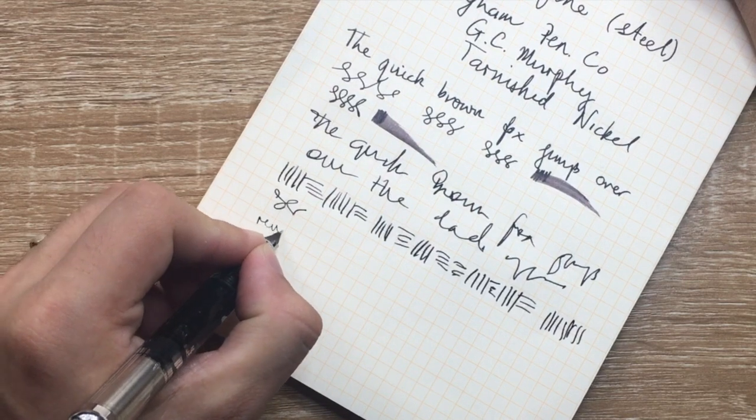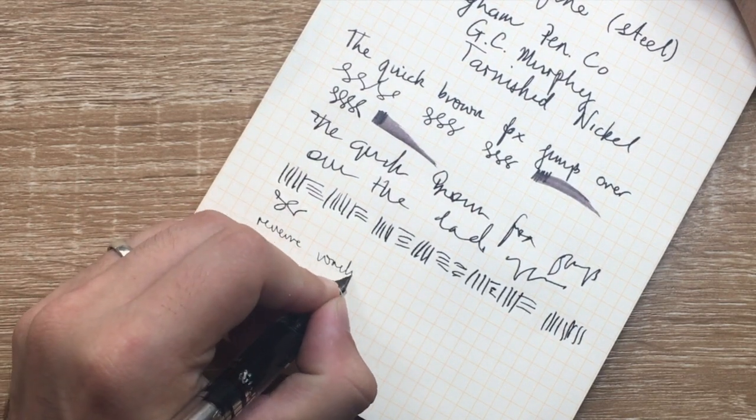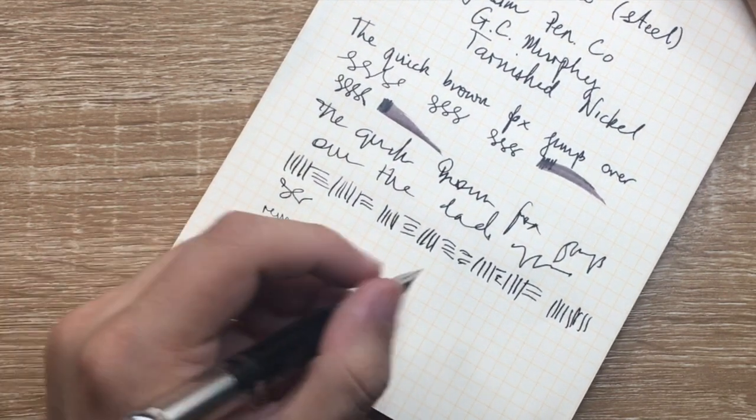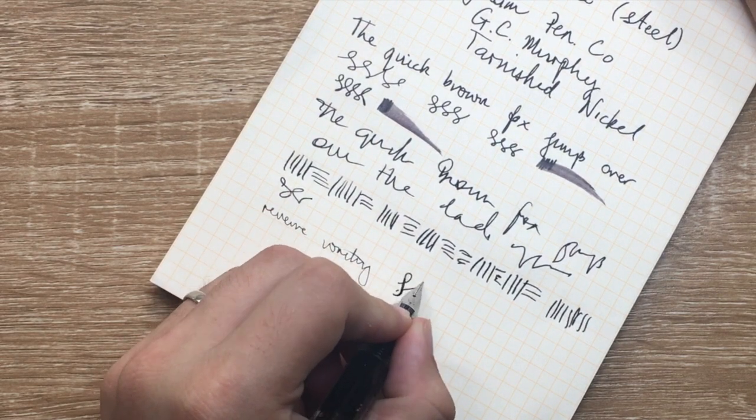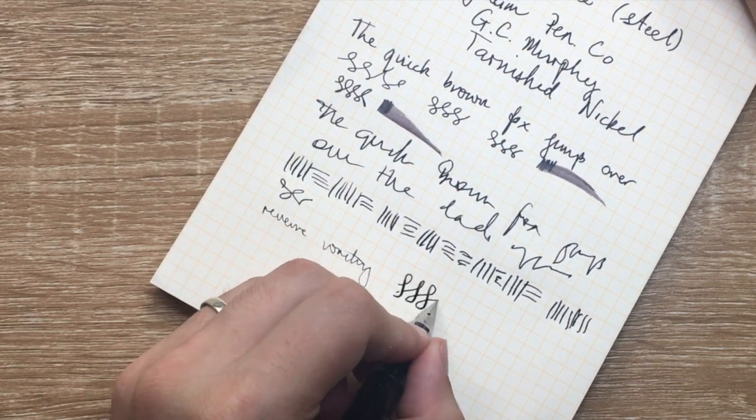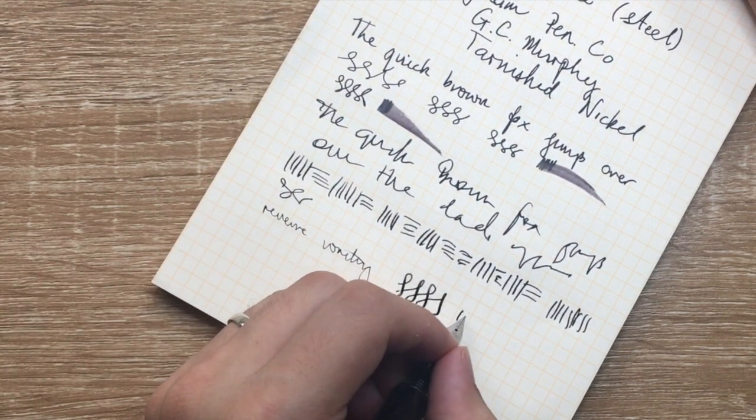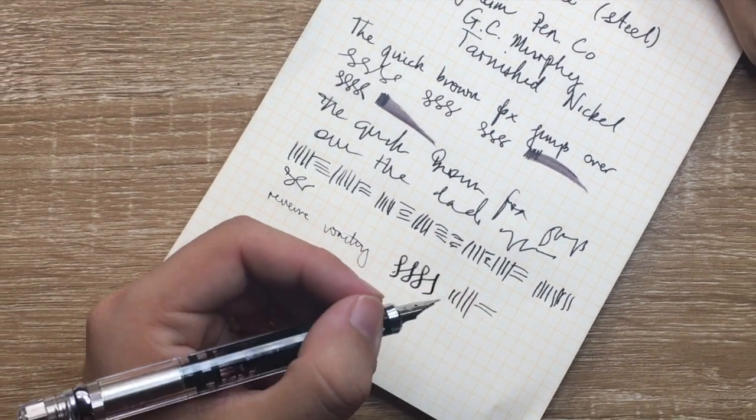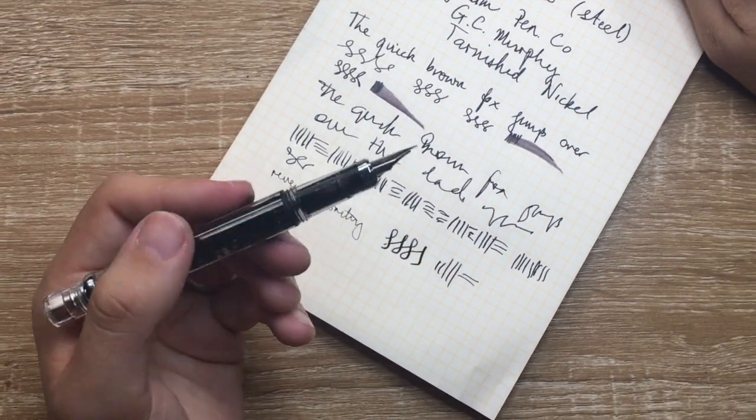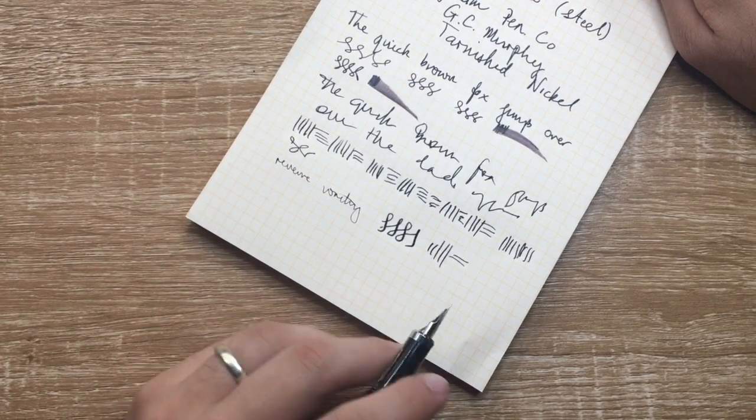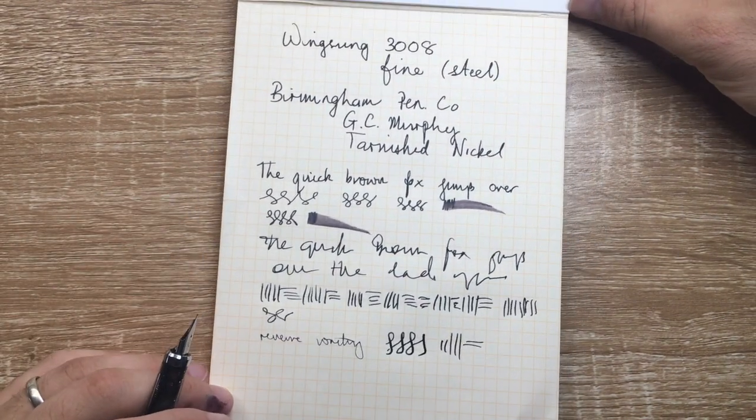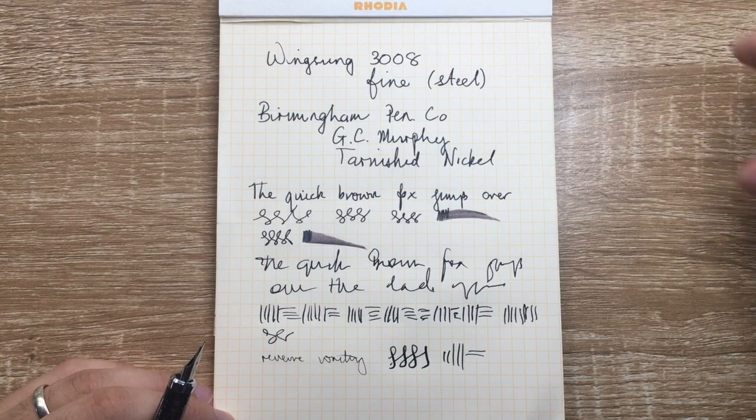But it's smooth and it does a really lovely job. Reverse writing. It's very fine and scratchy but possible flex. I wouldn't want to push this nib too hard. You can get probably a little bit of line variation out of it. But I think you're more likely to spring the nib than anything. They're quite soft and not soft in the flexy way. Soft in the I will break kind of way.